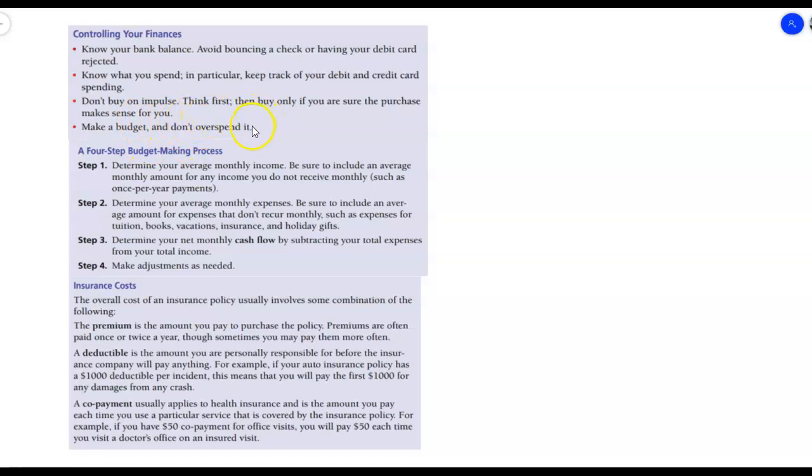Don't buy on impulse. Think first and buy only if you are sure the purchase makes sense for you. A lot of us are impulse buyers. Stores and corporations really take advantage of this. Notice that when you go to Walmart, as you're going through the checkout, they have all those cool little gadgets and candy bars and sodas right there. Because they know there's a good chance you're going to impulse buy those. Make a budget. Don't overspend it.